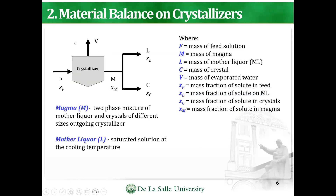Going back to the material balances: the feed with composition X_F enters the crystallizer. What comes out are vapor (if present) and the magma. The magma is a two-phase mixture of mother liqueur (L or ML) and crystals of different sizes leaving the crystallizer. The mother liqueur L is a saturated solution at the cooling temperature, so it's important to know the compositions at those temperatures.